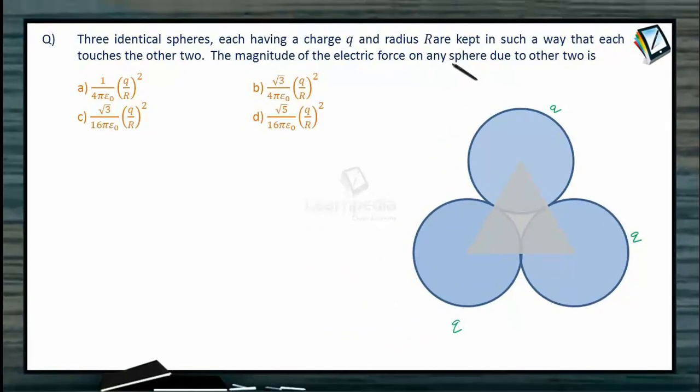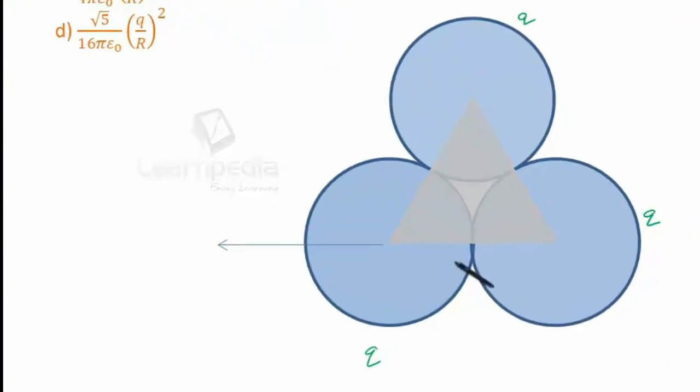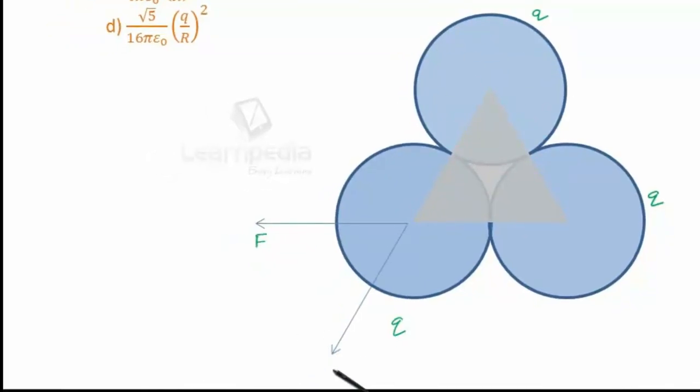What would be the magnitude of electric force on any sphere due to the other two? Suppose we find the force on this sphere. Because of this sphere, since all three spheres have the same charge of the same nature, repulsive force will be there. This sphere is going to repel this one by this force, say it is F. Similarly, the other sphere is going to repel this sphere this way. It will be F because all three spheres are identical - the force applied by any of these spheres on any other will be the same.